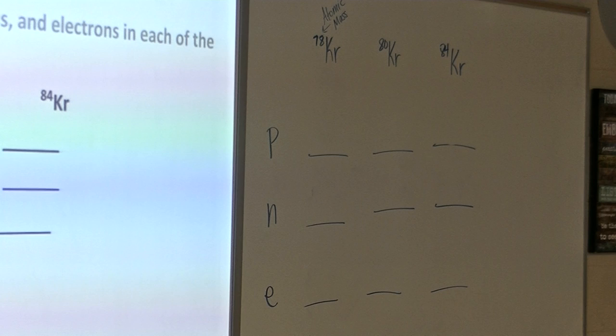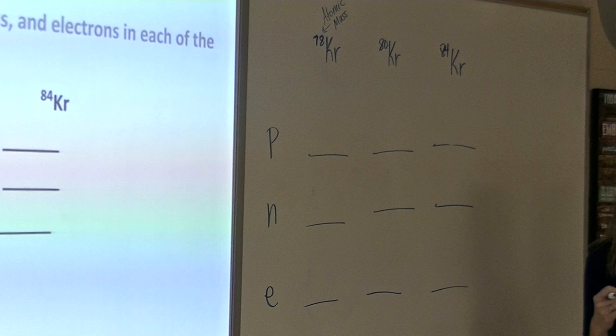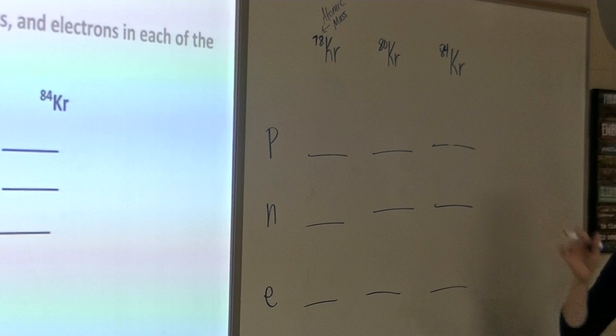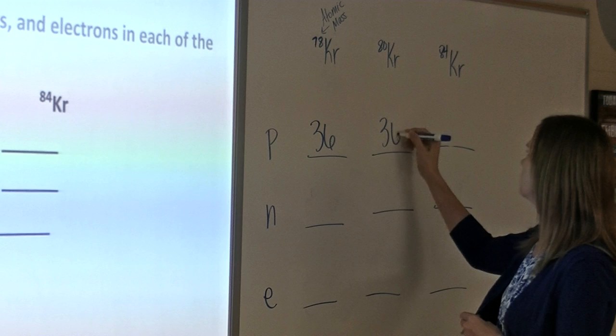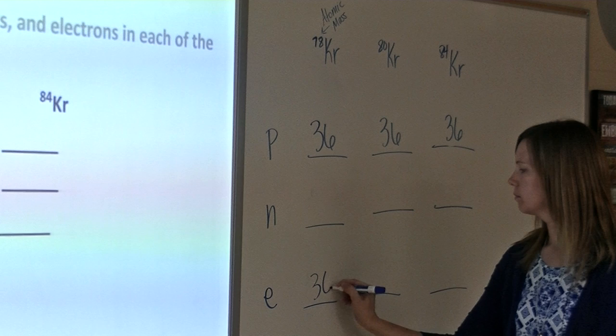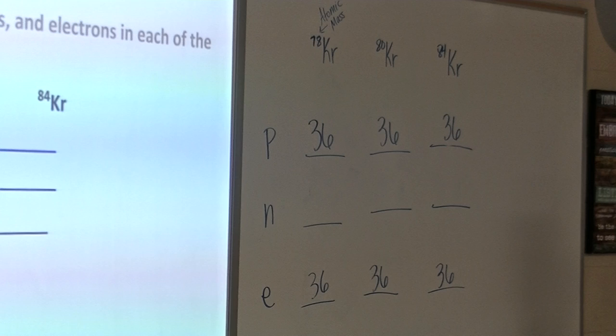Okay, so guys, what is the atomic number for krypton? 36. 36, right? So where am I going to put 36 up here? Protons. Protons. And where else? Electrons. Electrons. Okay, awesome. Now, how do I find the number of neutrons, Sarah?